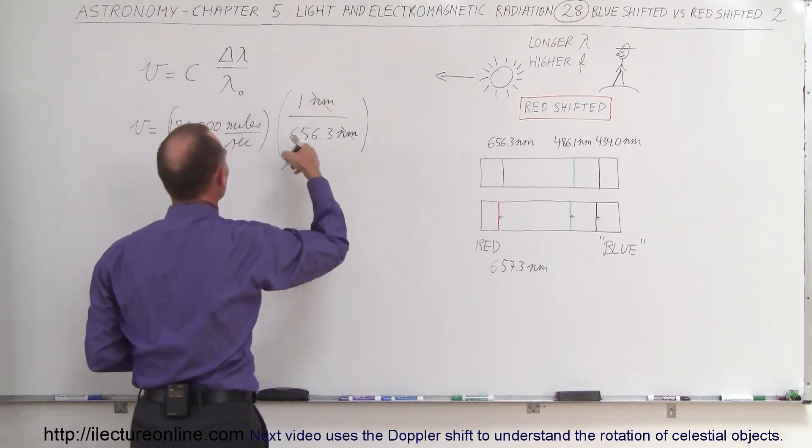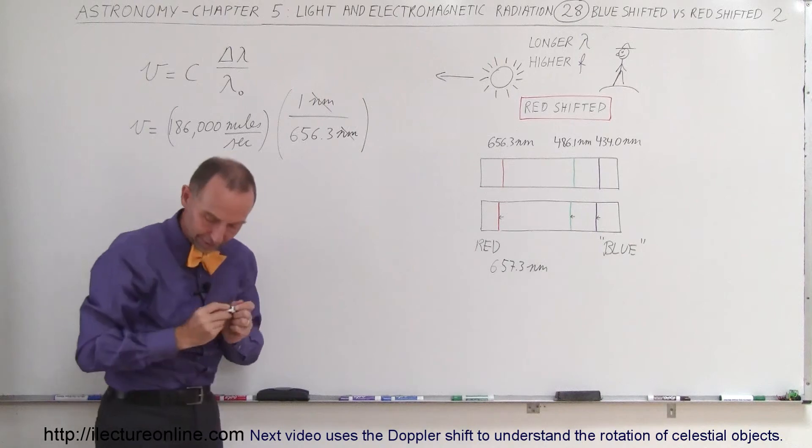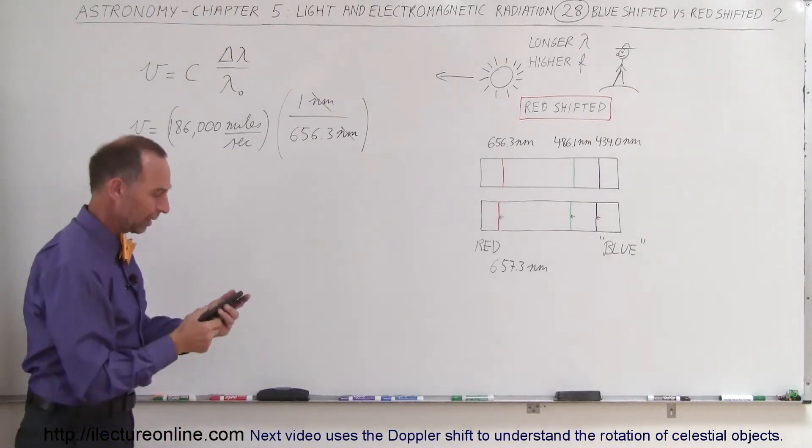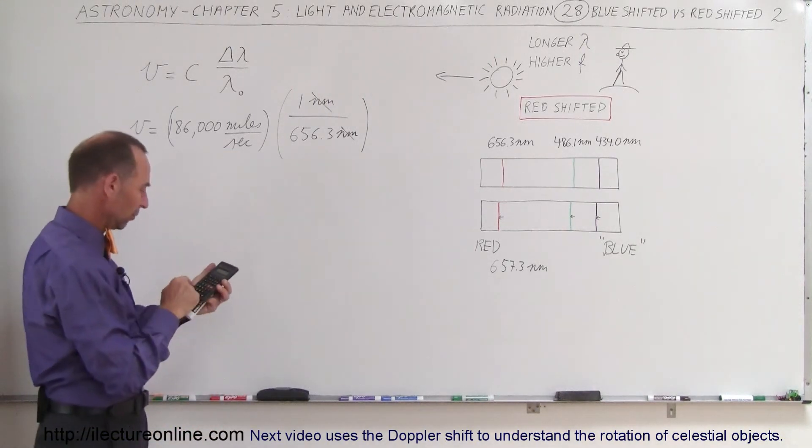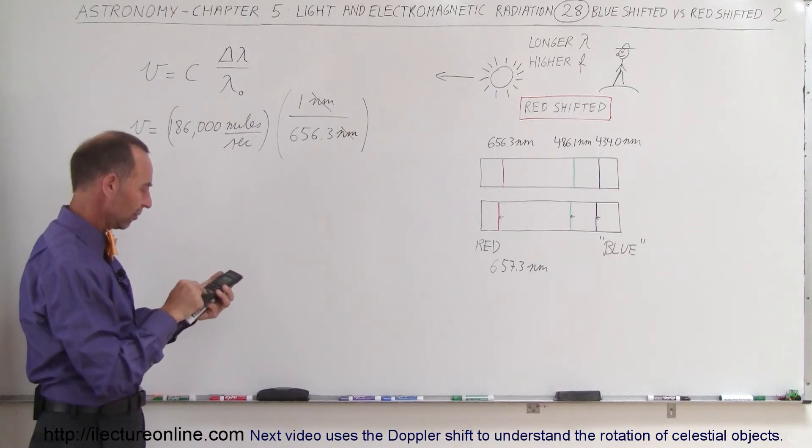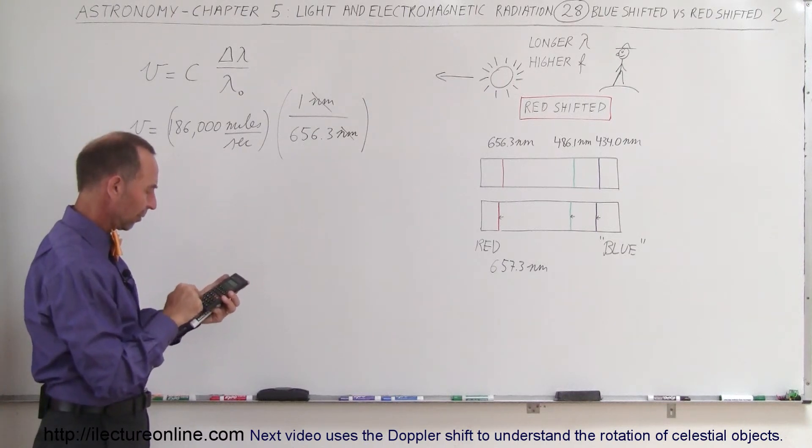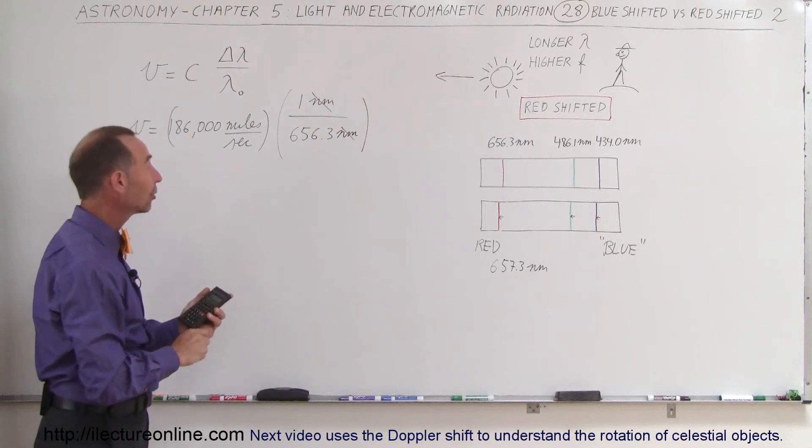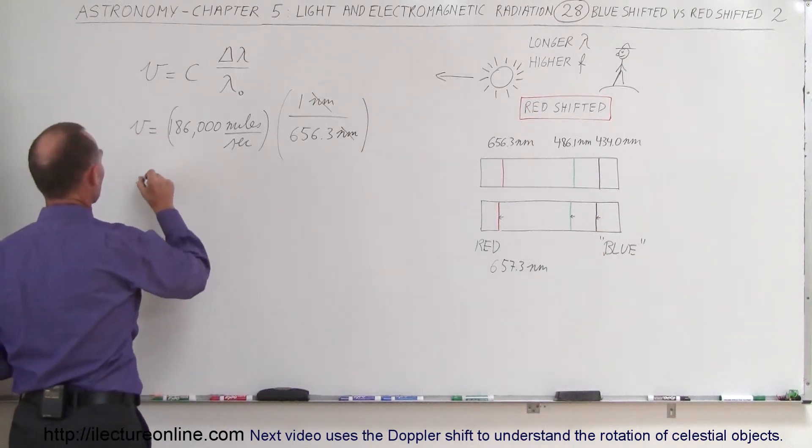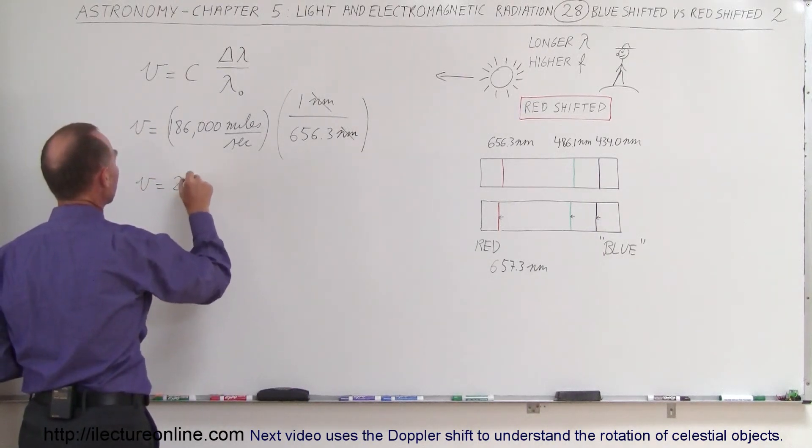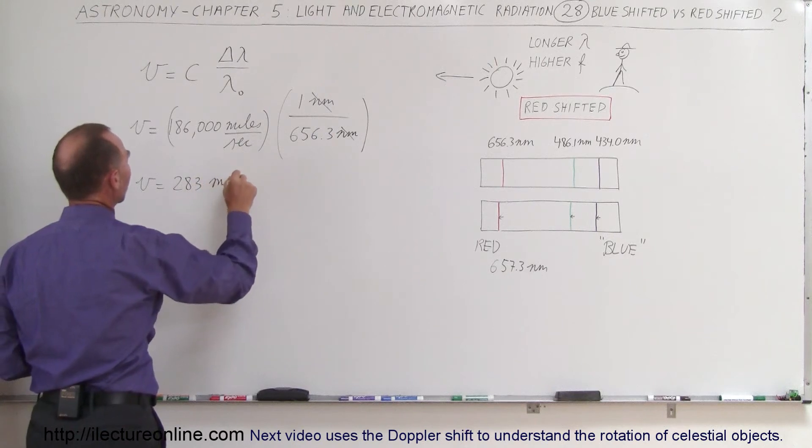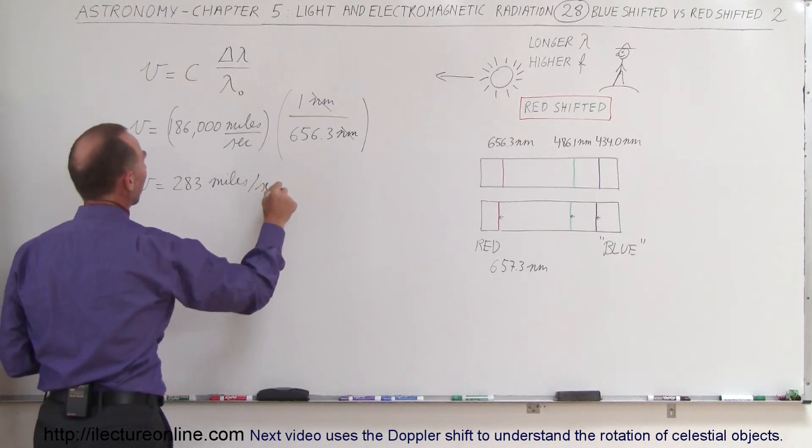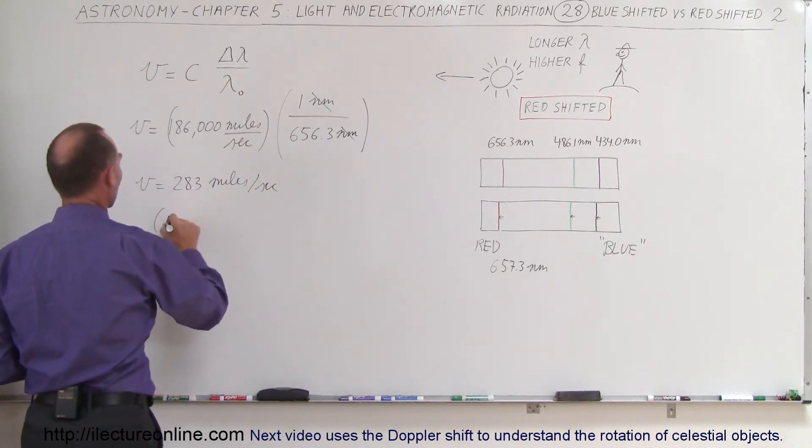Notice the nanometers cancel out. One divided by 656.3 times the speed of light. After my calculator right here, let's find out what that's equal to. So 186,000 divided by 656.3 equals—and we come up with 283 miles per second.